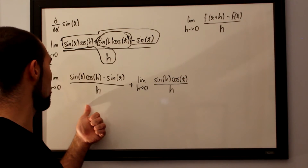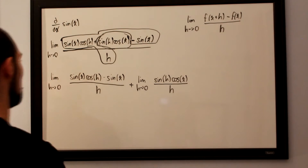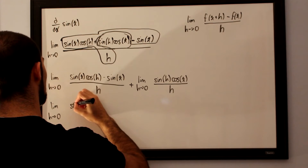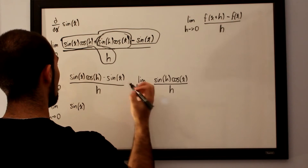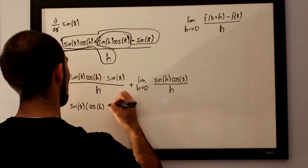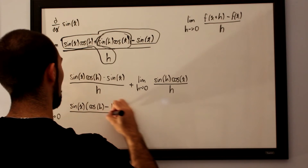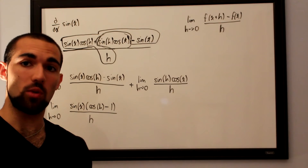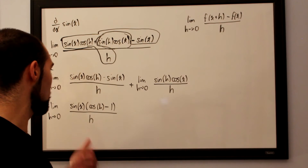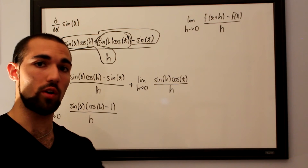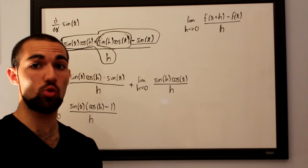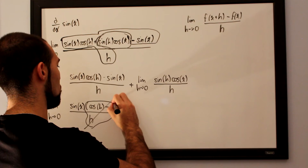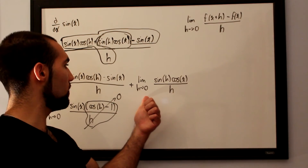In the first limit, we can factor sine of x out, leaving cosine of h minus 1 over h. This is one of those limits from a previous video that we can take for granted and assume goes to 0. Cosine of h minus 1 over h behaves the same as cosine of x minus 1 over x, which was discussed in the trigonometric limits video, and this entire term goes straight to 0.